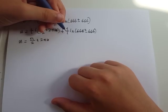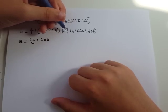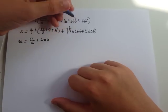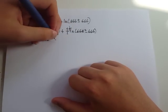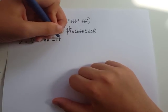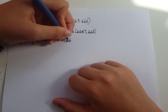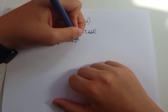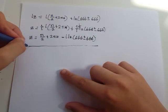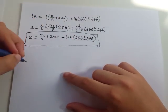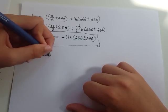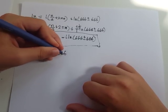We don't like the i in the denominator, so we multiply it by i over i, which is 1. This becomes negative i times natural log of 666 plus or minus 666. And this is our final answer for what to put into the sine function to get out 666.